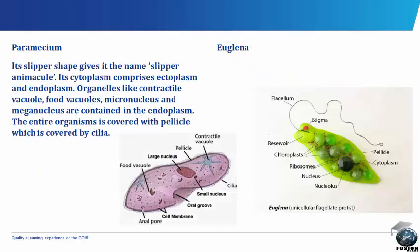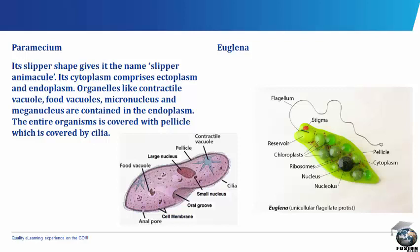The Paramecium. Its slipper shape gives it the name slipper animalcule. Its cytoplasm comprises ectoplasm and endoplasm. Organelles like contractile vacuole, food vacuoles, micronucleus and macronucleus are contained in the endoplasm. The entire organism is covered with a pellicle which is covered by cilia.